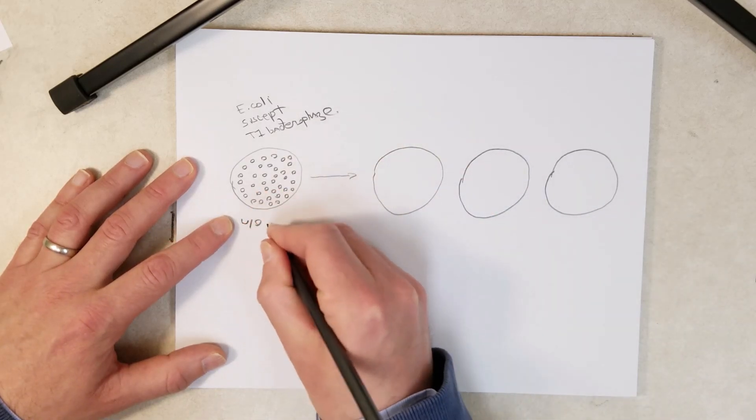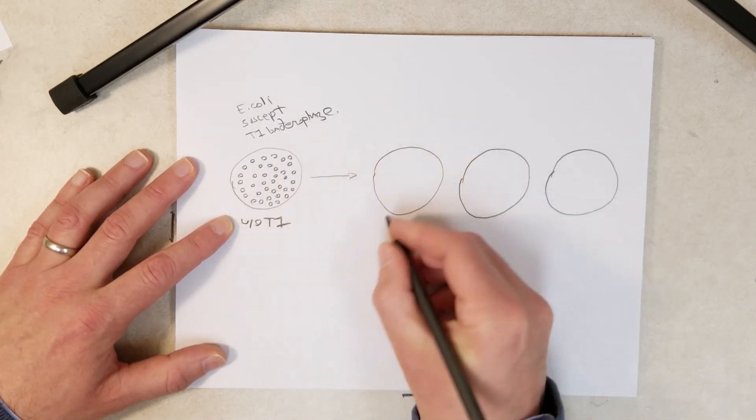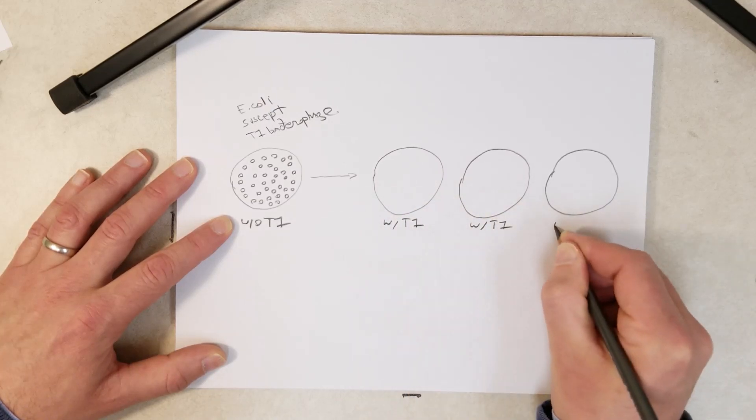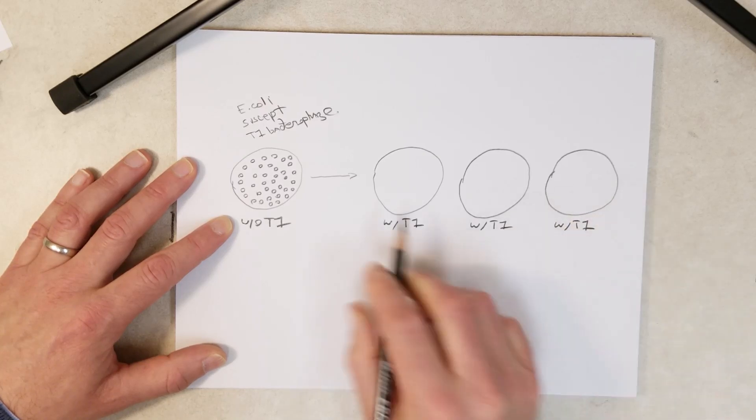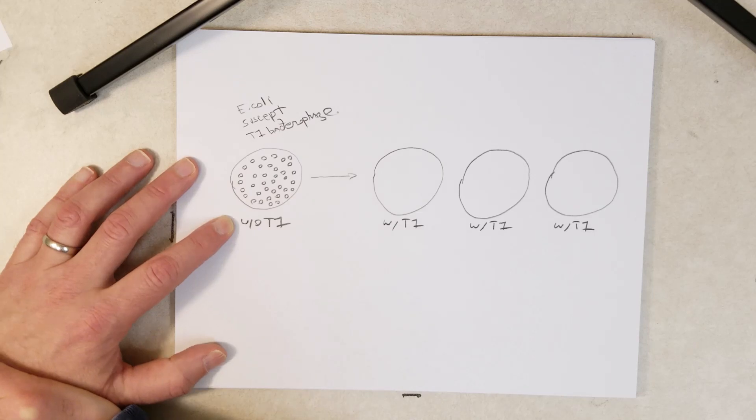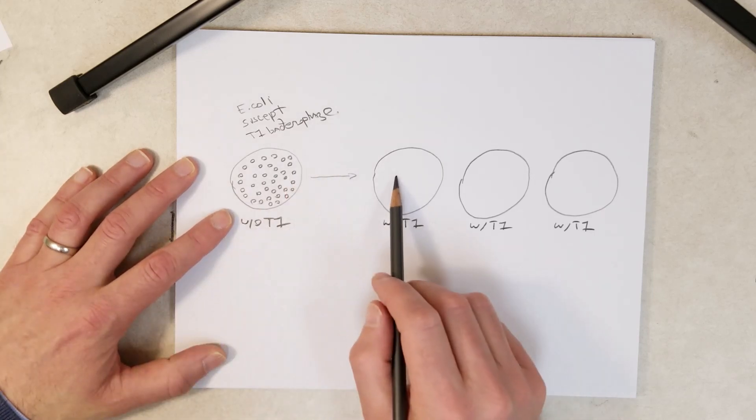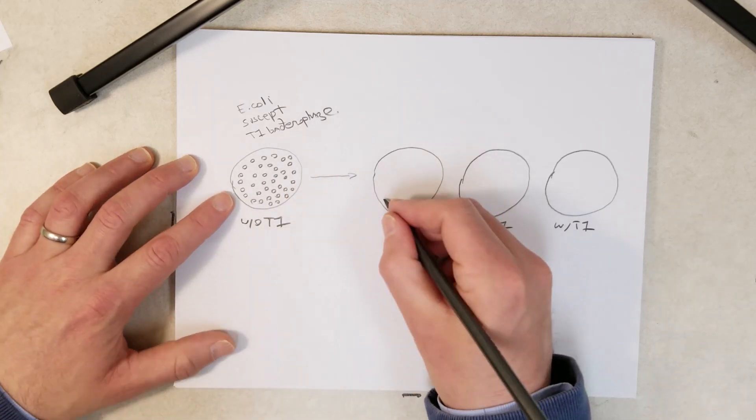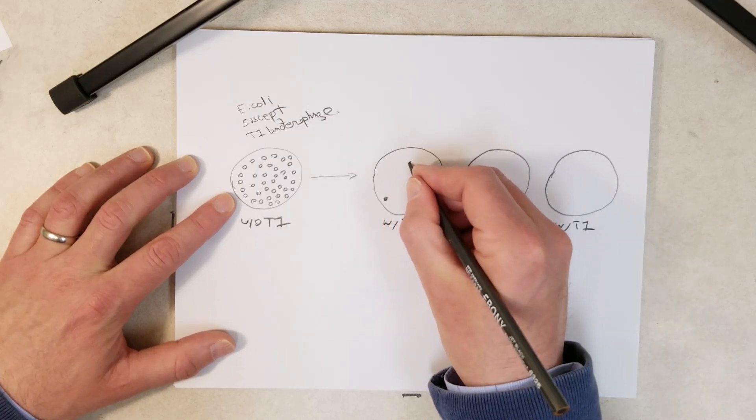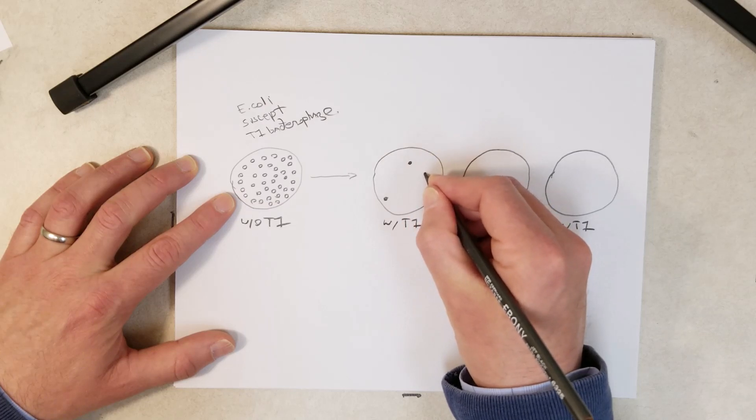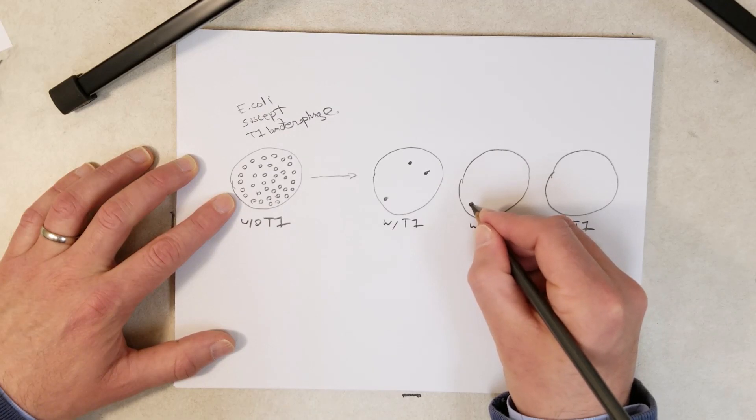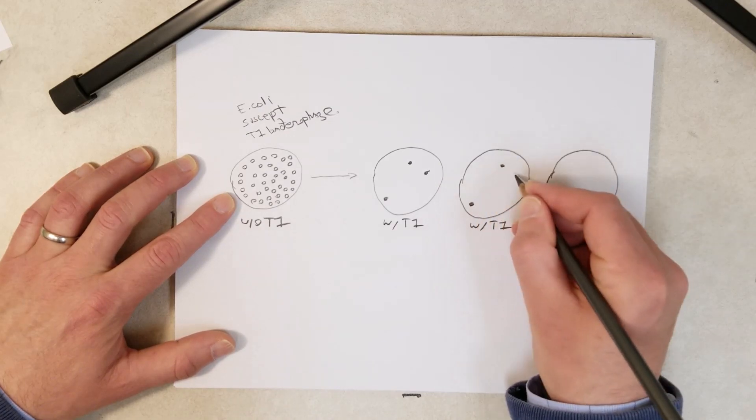For now I'll describe the results. Let's say three different plates of medium. The first one without T1, so no T1. These three all have the bacteriophage embedded in the medium. When they replica plated these, what they saw were colonies that were resistant to the T1 bacteriophage and they were at the same spot on each plate. Now what does that tell us?